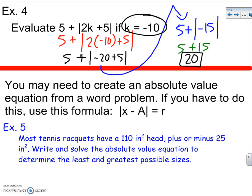The last part, you may need to know is to be able to create an absolute value equation from a word problem. If you have that, just follow this formula: the absolute value of x minus the average equals the range. In this problem it says most tennis rackets have a 110 inch head, that's the average. Plus or minus 25, that's my range. So write and solve, my equation is absolute value of x minus 110 equals my range. Solving is just like we did before.